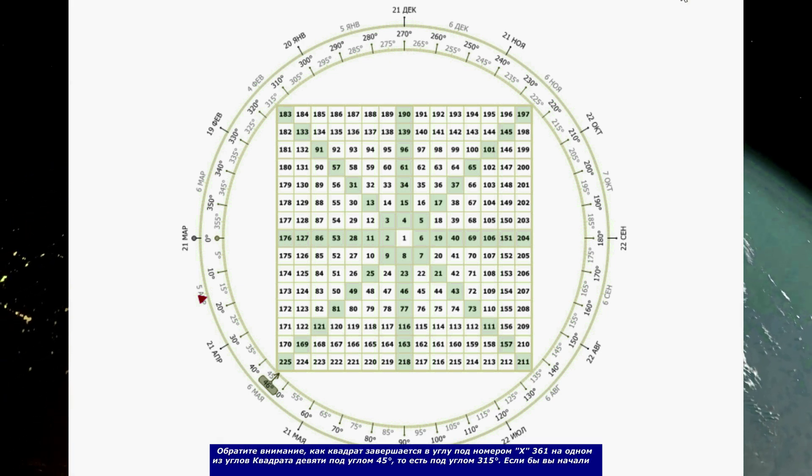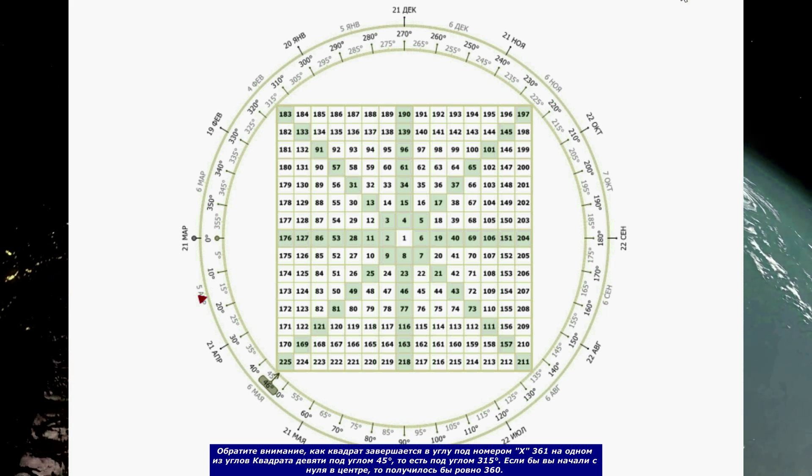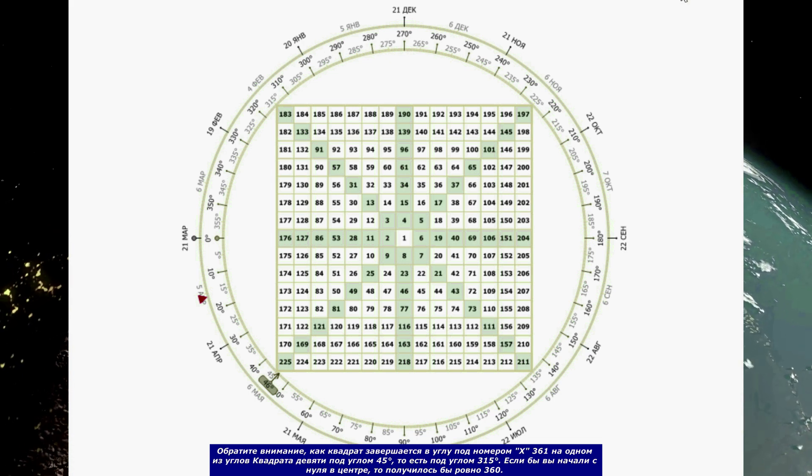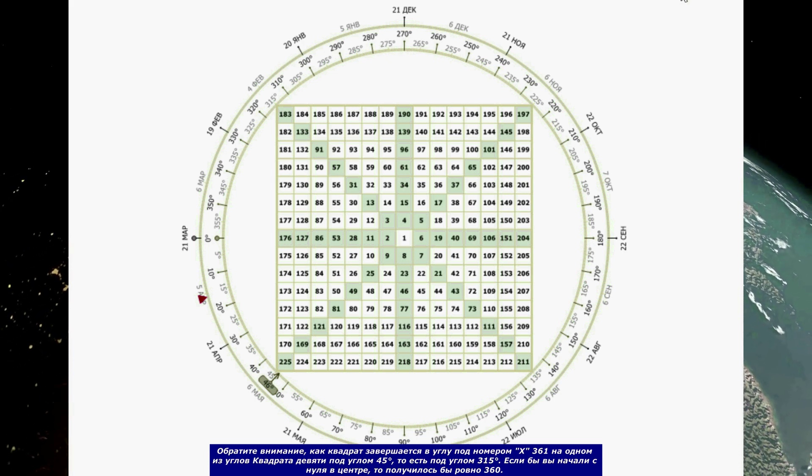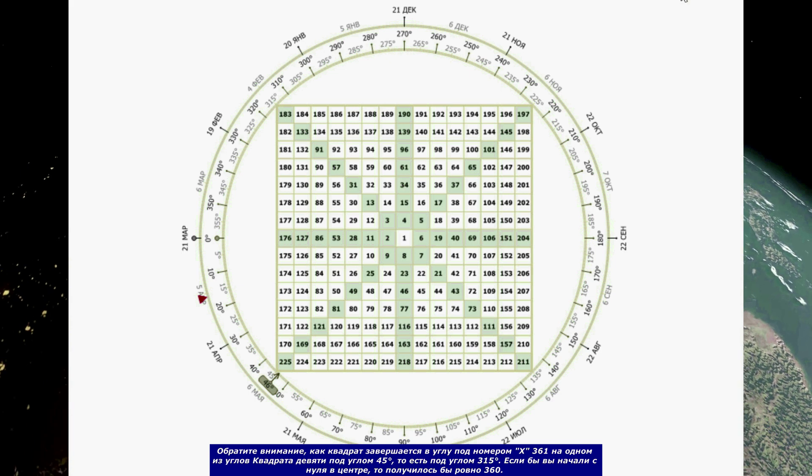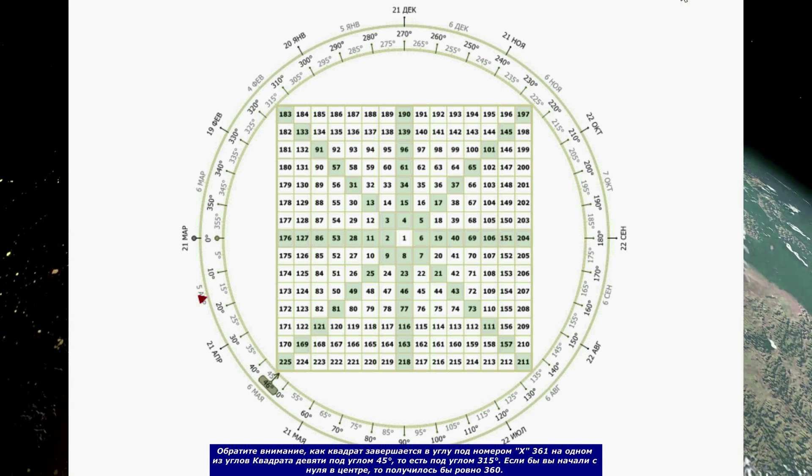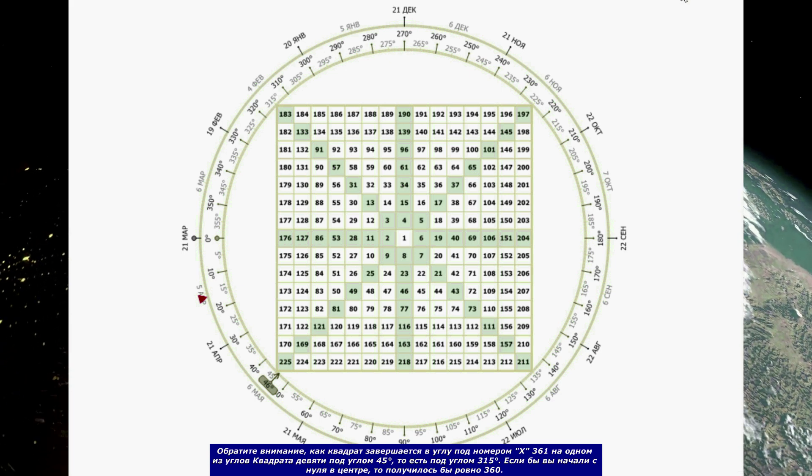Notice how the square completes at the corner number X361 on one of the 45 degrees angles of the Square of 9, the 315 degrees angle. If you started with a 0 in the center, it would have come out exactly at 360.